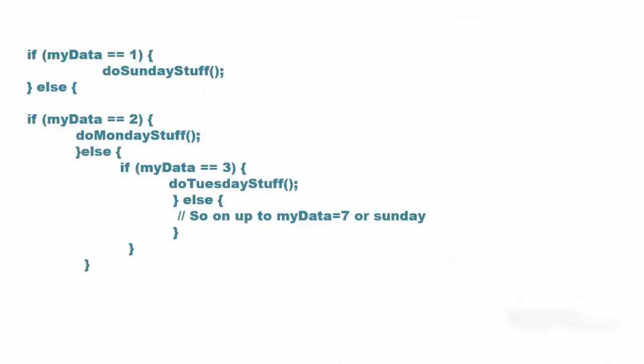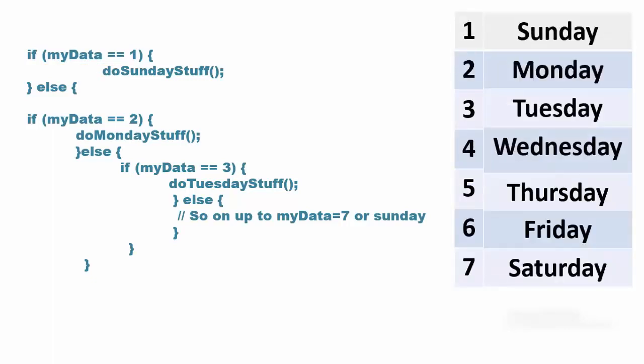In previous video, we discussed this code which uses cascaded statement block. This code tells you what day it is on the basis of the value in the variable myData. Value 1 through 7 corresponds to the days Sunday through Saturday. For example, if the value of variable myData is 1 then day is Sunday and function do Sunday stuff is called.